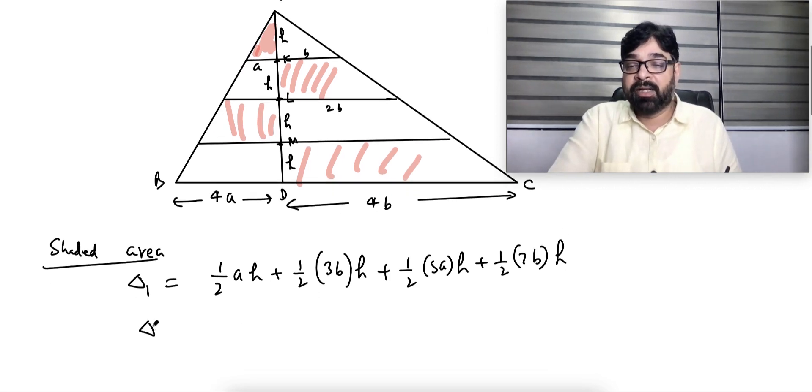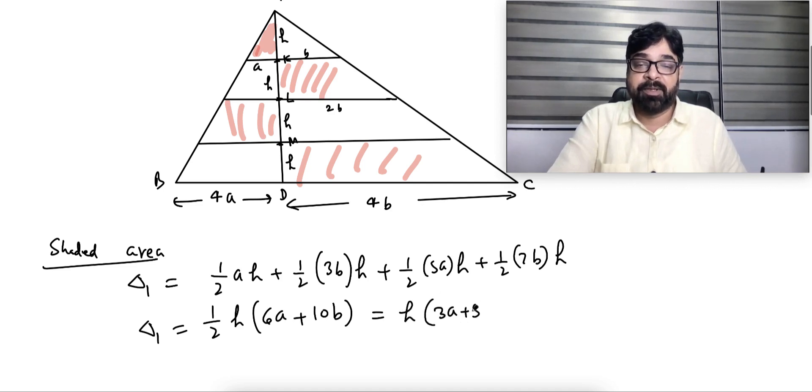So delta 1 I can say is half h. I can take h common. What's left? a plus 5a equals 6a, plus 3b plus 7b equals 10b. Or you can take 2 common also, so h into 3a plus 5b. Perfect. This is the shaded area.